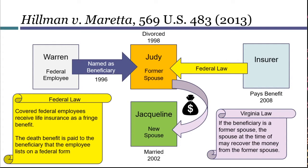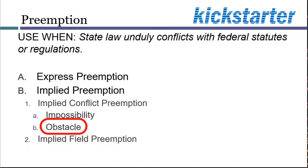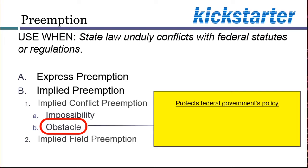Obstacle preemption is much more common. As we just saw, the purpose of impossibility preemption is to protect individuals. By contrast, the purpose of obstacle preemption is to protect the federal government — and specifically, the federal government's ability to pursue its policies without being undercut by state laws. Under obstacle preemption, we first try to figure out the purpose of the federal law. The purpose might not be expressly stated in the statute, so courts have to read between the lines. Also, a federal law might serve more than one purpose.